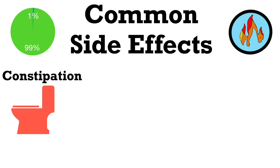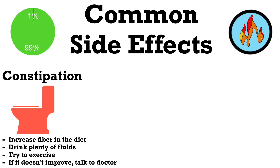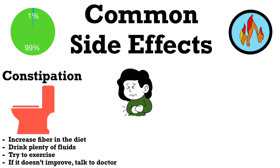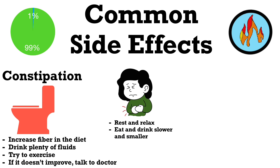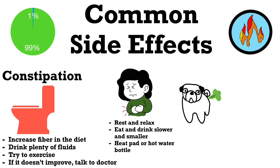Another common side effect is constipation — the opposite of diarrhea. To address it, increase the fiber in your diet, drink plenty of fluids, eat fresh fruit, vegetables, and cereals, and try to exercise, for example by going for a daily walk or run. Another common side effect is stomach pain. Try to relax and rest, eat and drink slowly, have smaller and more frequent meals, or use a heat pad or covered hot water bottle on your stomach. If you're in a lot of pain, speak to somebody.